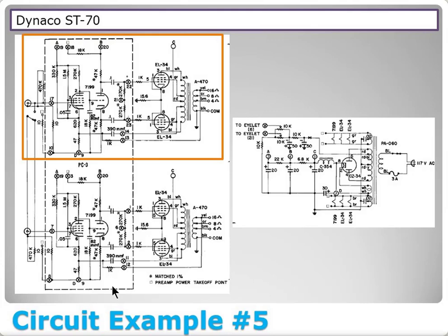The Dynaco ST70 manual contains two schematic pages. If you followed episode 2, you'll recognize one page as the power supply. The 'ST' stands for stereo — it actually has two complete output amplifiers on one chassis. The input feeds through some stages, gets to the outputs, and feeds into an output transformer to a set of speakers — one for the left channel, one for the right.